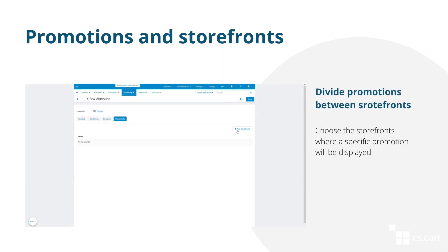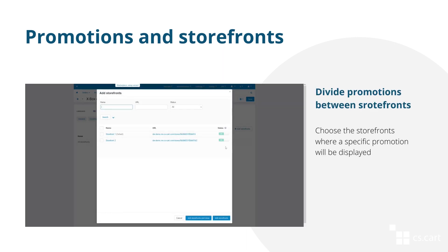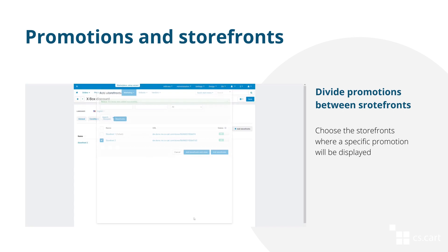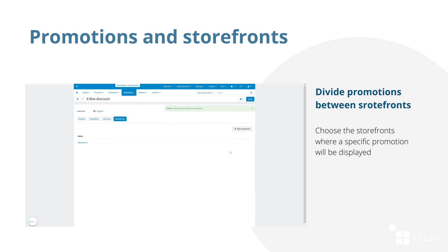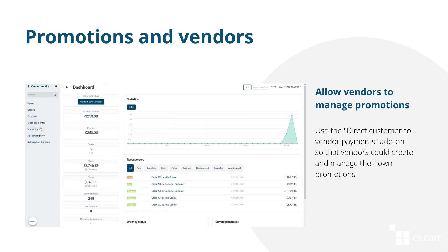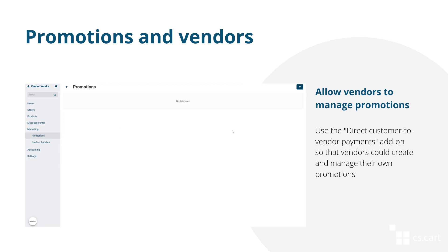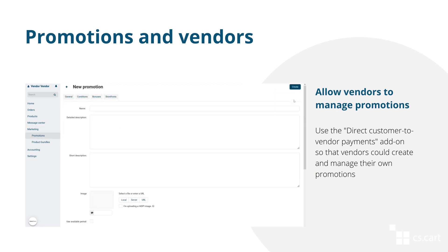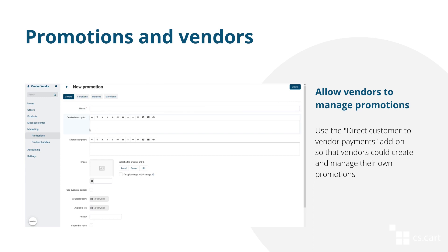Divide promotions between storefronts. If you have multiple storefronts in your marketplace, you can decide what promotions will be displayed on specific storefronts. By default, vendors cannot create promotions in their marketplace, but it can be possible if you install the direct customer to vendor payments add-on. In this case, all the money for orders will go from customers directly to vendors, and they will be able to create and manage their own promotions.